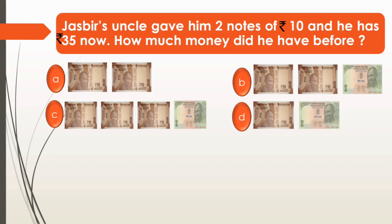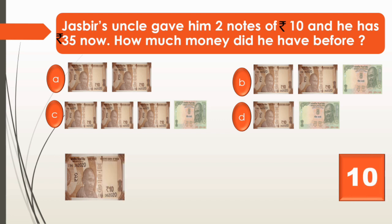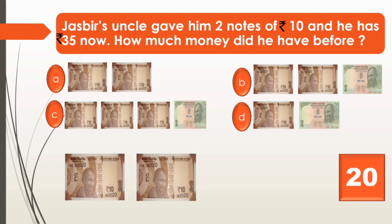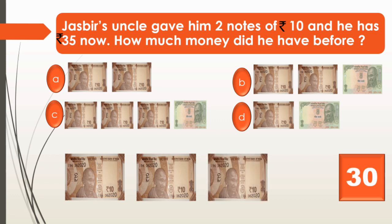Jasbir's uncle gave him 2 notes of 10 rupees and now he has 35 rupees. Let's have some currency notes to understand this. Here we have a 10 rupee note and one more 10 rupee note — these are 20. One more 10 rupee note, now we have 30. One more 5 rupee note, and now we have 35 rupees.